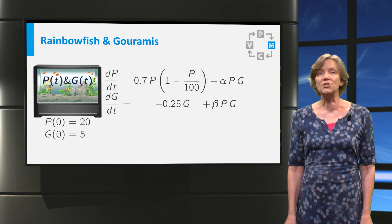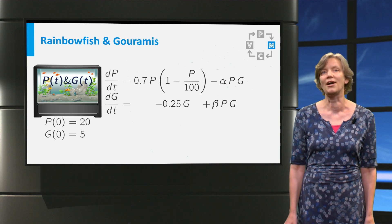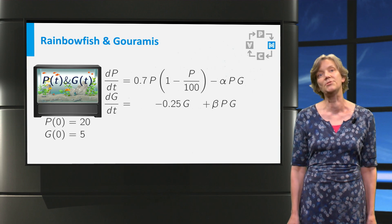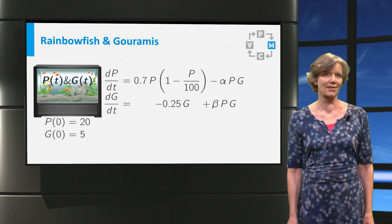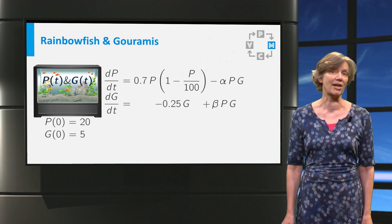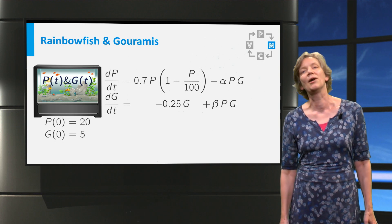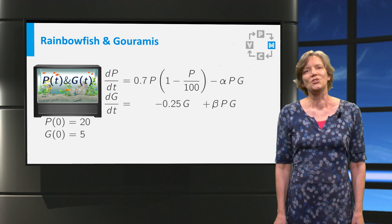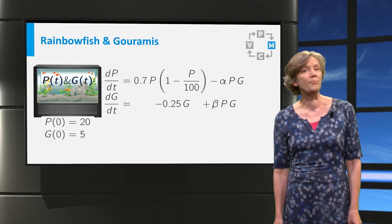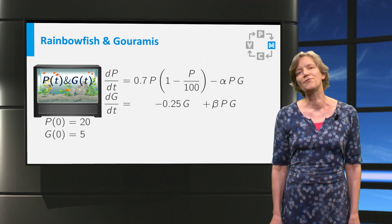For these interaction terms we start simple. Both terms are modeled as a constant times the product of P and G. Maybe this does the trick, and we can always do another modeling cycle when it doesn't. So what could be an appropriate value for alpha and beta?